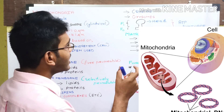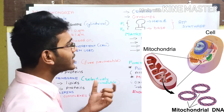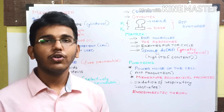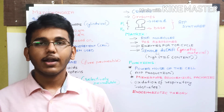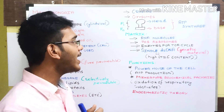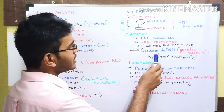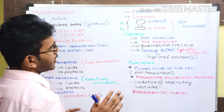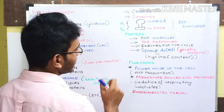The mitochondrial matrix also contains a single double-stranded DNA as its main genetic material. This DNA has a high GC (guanine-cytosine) content. That is all about the mitochondrial matrix.